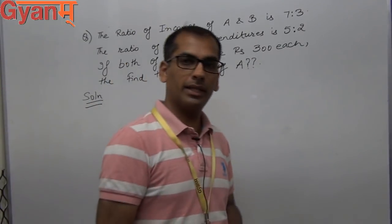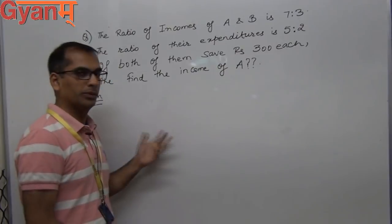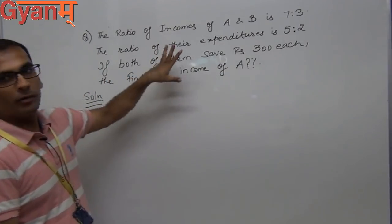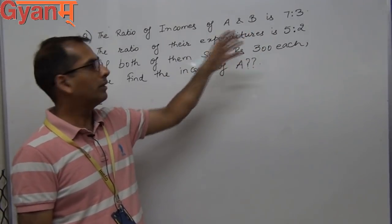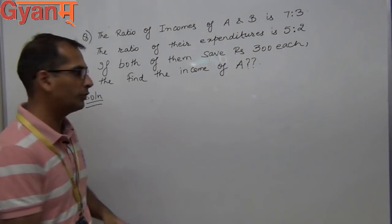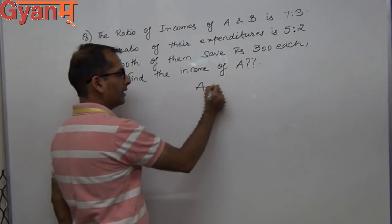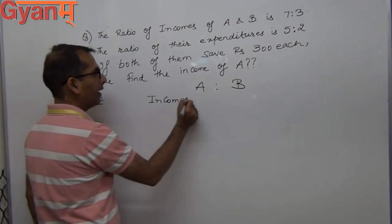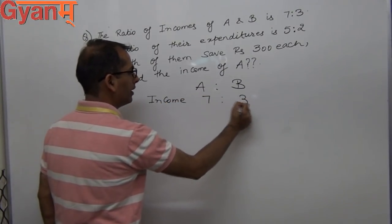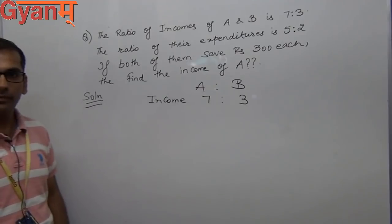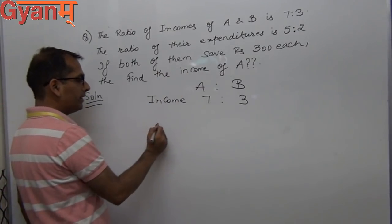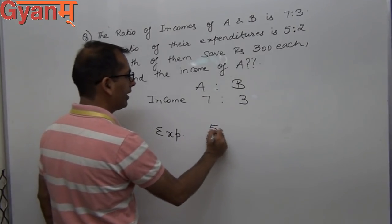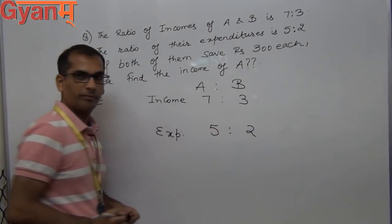Hello friends, today we are going to discuss a basic problem based on ratio. The question involves two persons A and B. The ratio of their incomes is 7:3, and the ratio of their expenditures is 5:2.